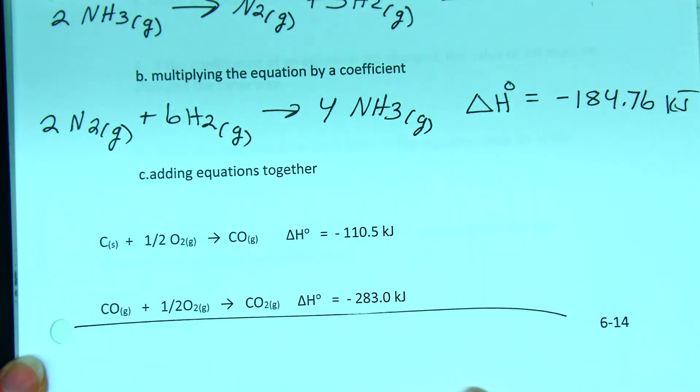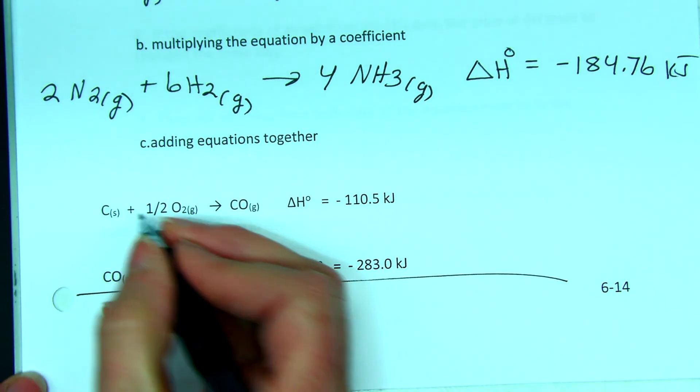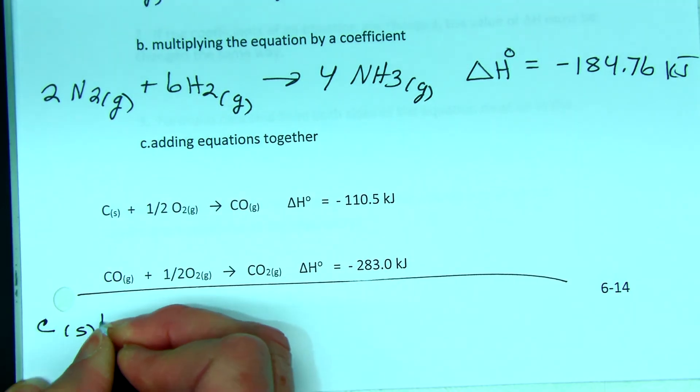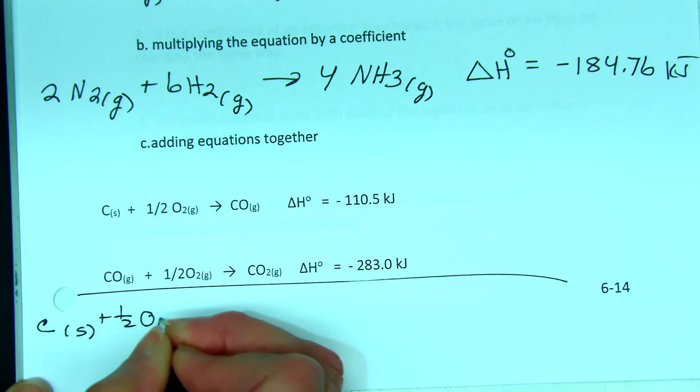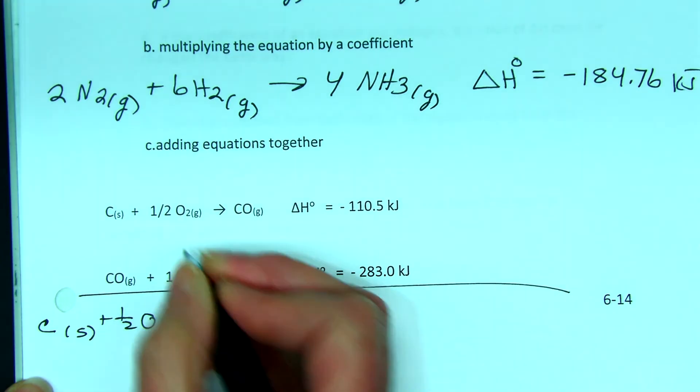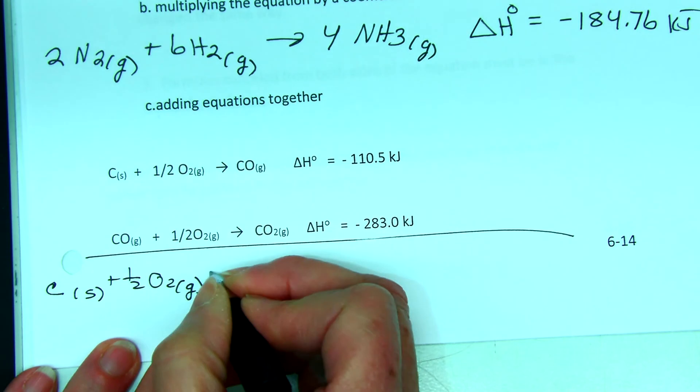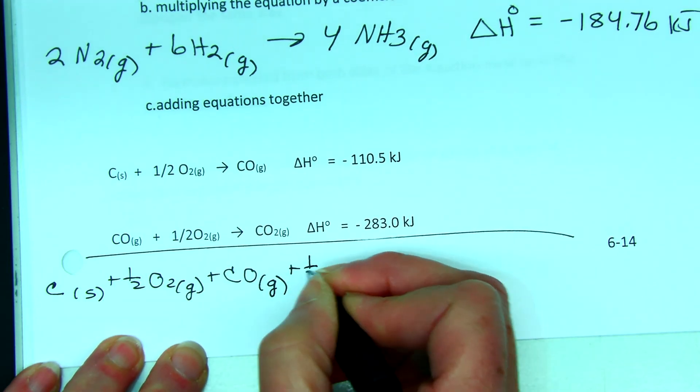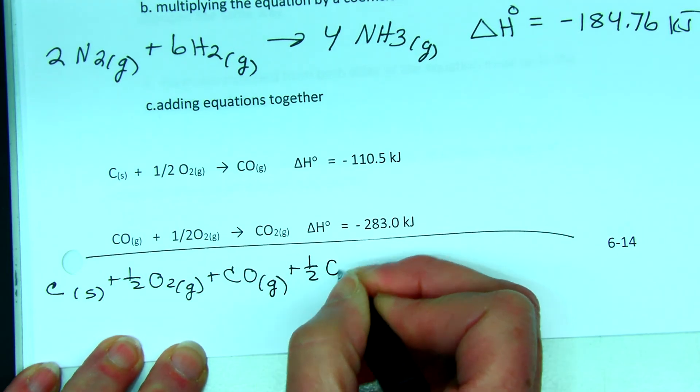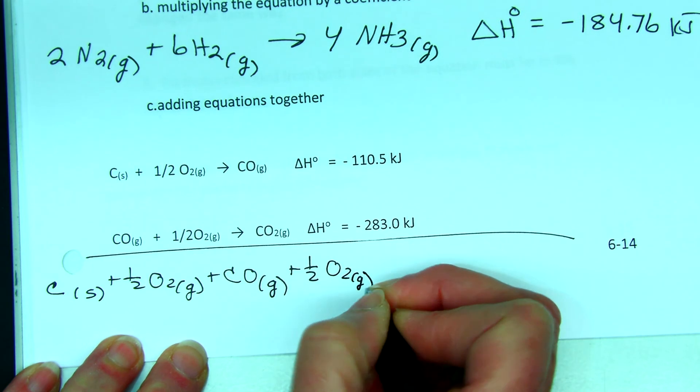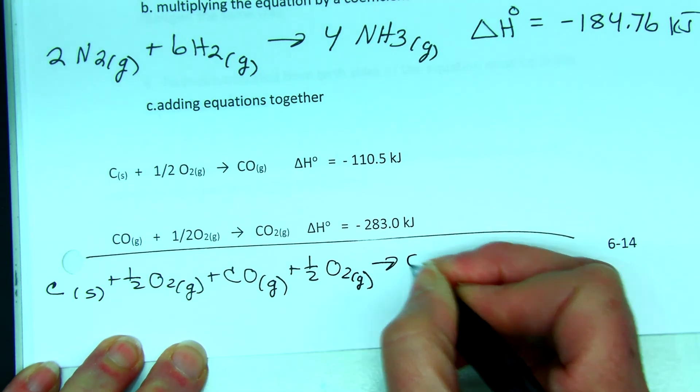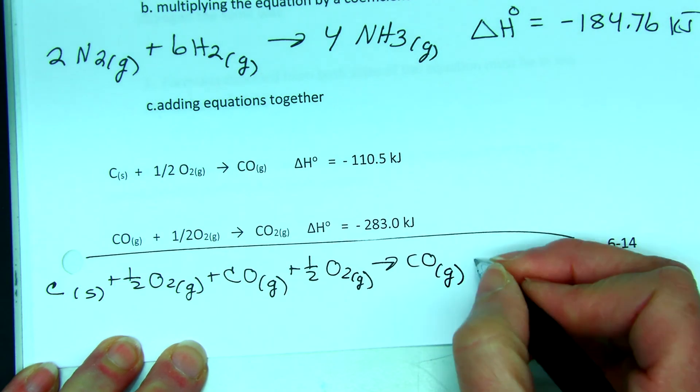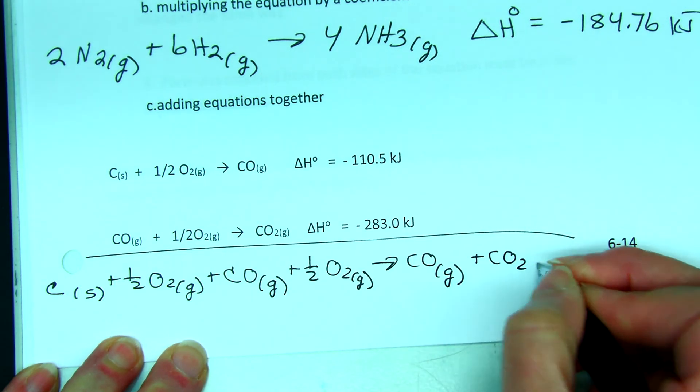So if I take this equation and just add it together, I take all the reactants, carbon solid plus one half oxygen gas from the first equation. I'll add in the reactants from the second equation, carbon monoxide gas plus one half O2 gas yields carbon monoxide gas from the first reaction plus CO2 gas from the second.